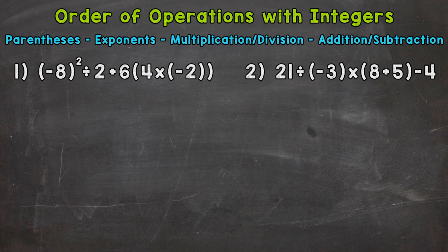Let's jump into number one where we have negative 8 squared divided by 2 plus 6 parentheses 4 times negative 2 end parentheses, and we'll go through our process starting with parentheses.